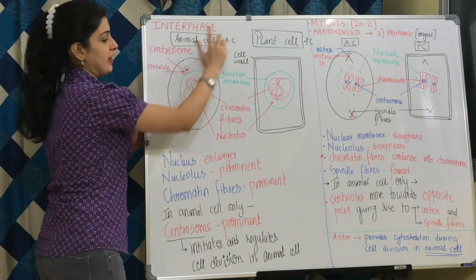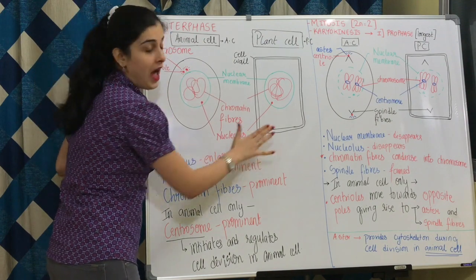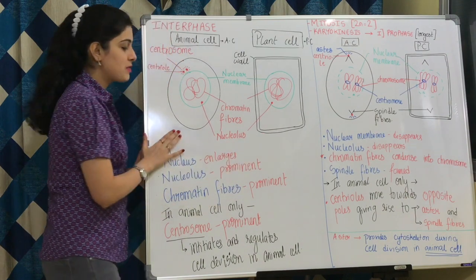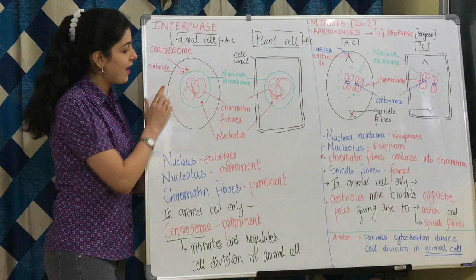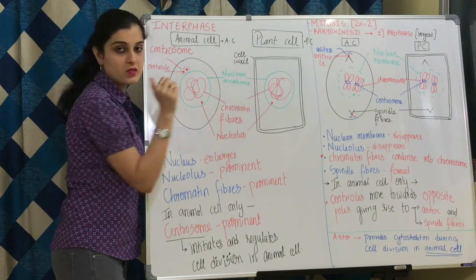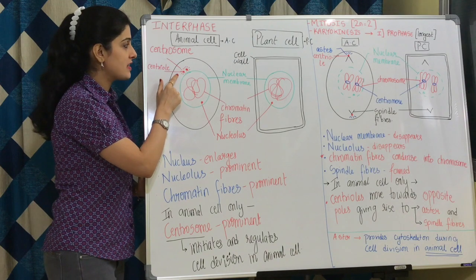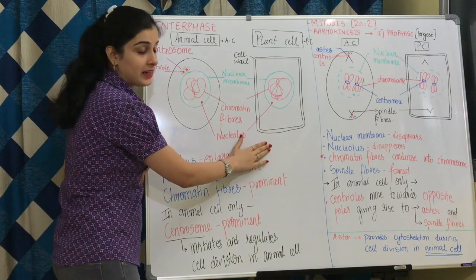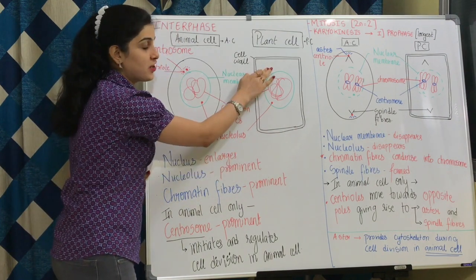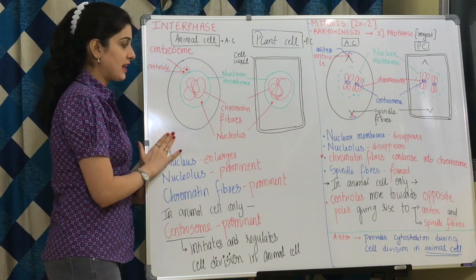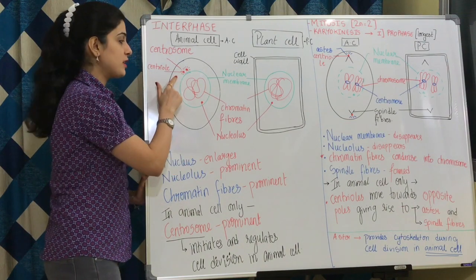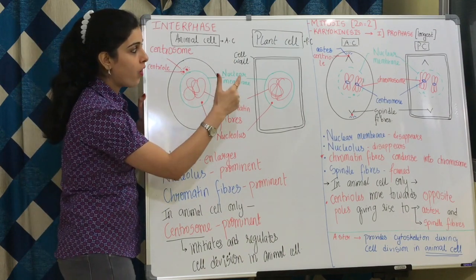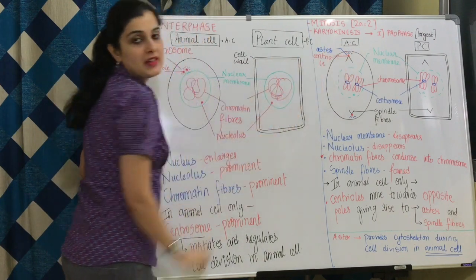So in interphase, this is my animal cell and this is my plant cell. How to distinguish between them? Plant cells have a cell wall; animal cells do not. Animal cells have something called a centrosome, and plant cells do not have a centrosome. From now on, I will be writing AC for animal cell and PC for plant cell.